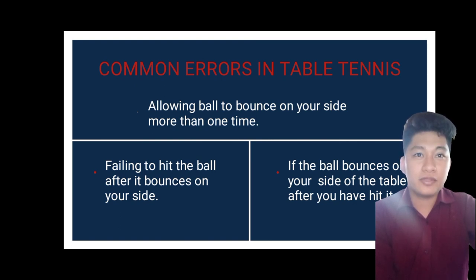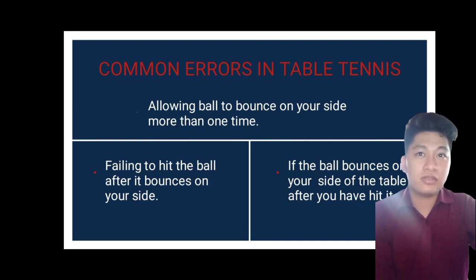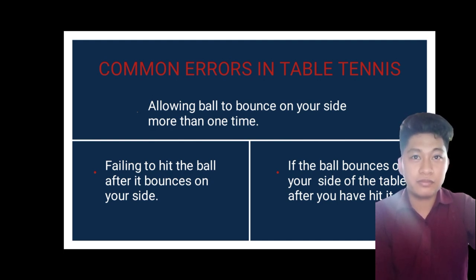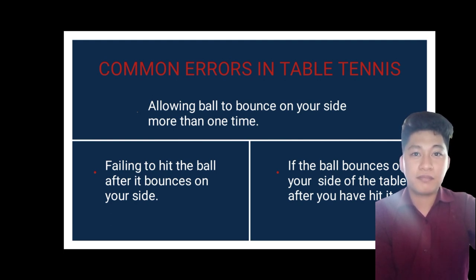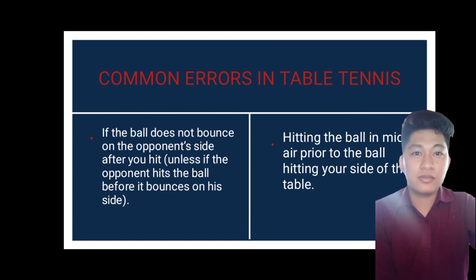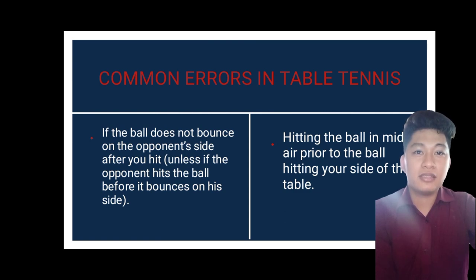There are also common errors when playing table tennis. These include: allowing the ball to bounce on your side more than once; failing to hit the ball after it bounces on your side; the ball bouncing on your side of the table after you have hit it; the ball not bouncing on the opponent's side after you hit it (unless the opponent hits the ball before it bounces); and hitting the ball in mid-air prior to the ball hitting your side of the table.